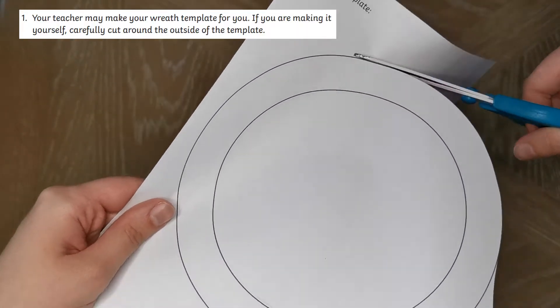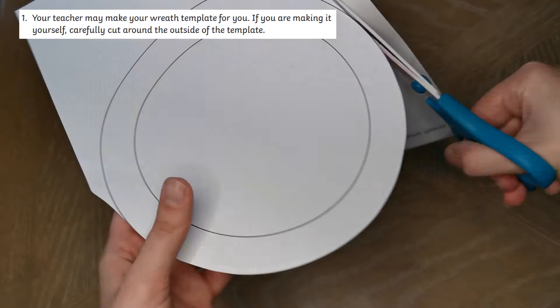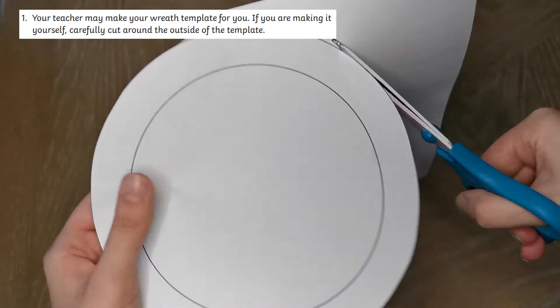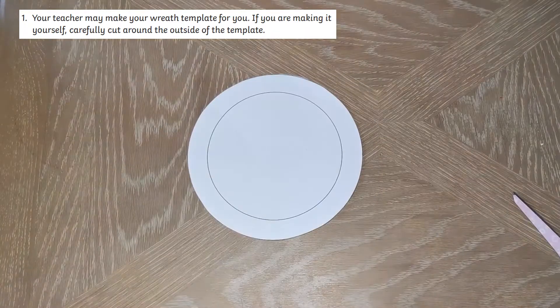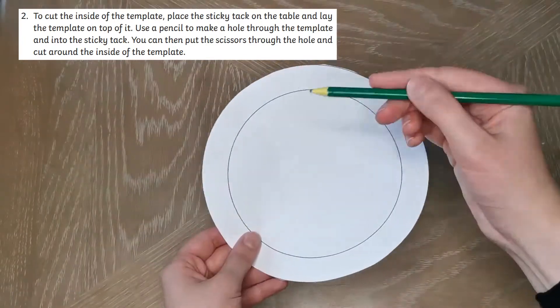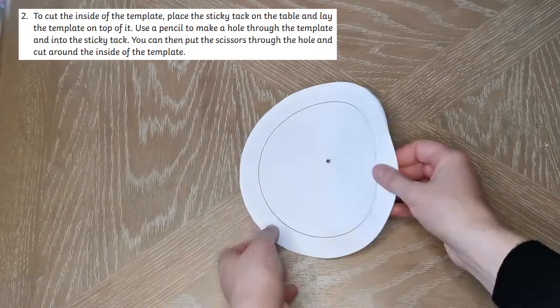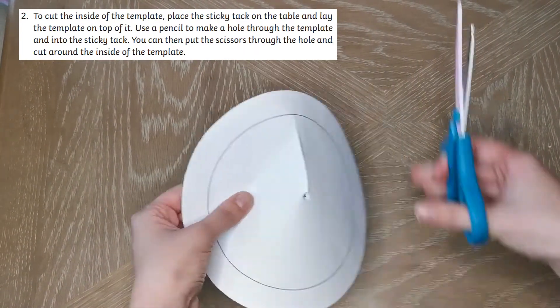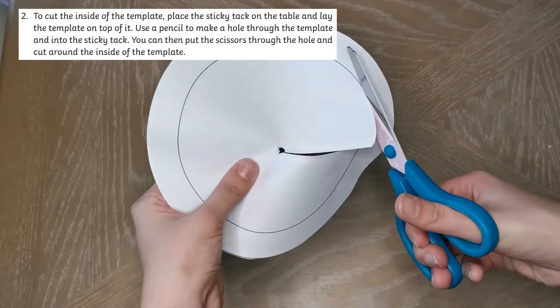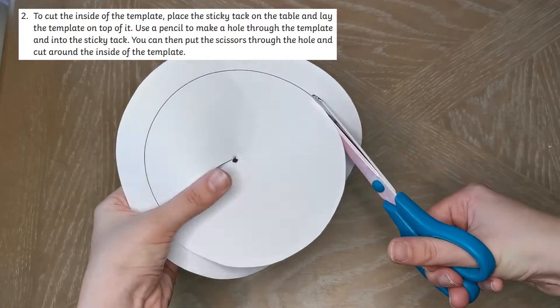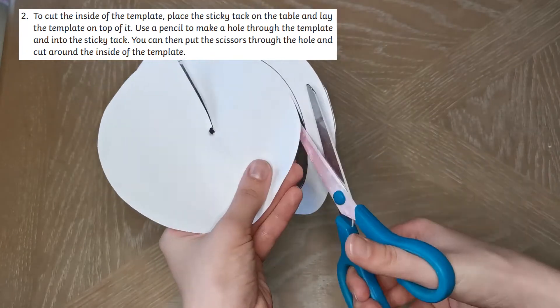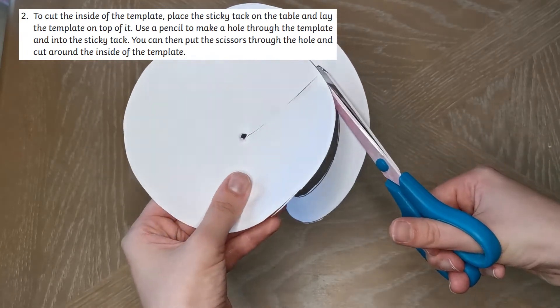Cut carefully around the outside of the template. To cut the inside of the template, place the sticky tack on the table and lay the template on top of it. Use a pencil to make a hole through the template and into the sticky tack. You can then put the scissors through the hole and cut around the inside of the template.